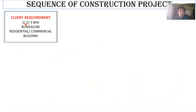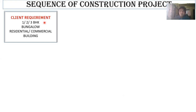Let us say you are a client and you have come to me. I'm an architect and a structural engineer. You have a plan of constructing a one BHK, two BHK, or three BHK house. BHK stands for Bedroom, Hall, and Kitchen. One BHK means one bedroom, one hall, and one kitchen. Two BHK means two bedrooms, one hall, and one kitchen. Three BHK means three bedrooms, one hall, and one kitchen. Similarly, four BHK would have four bedrooms and five BHK would have five bedrooms, one hall, and one kitchen.